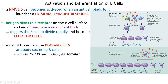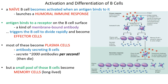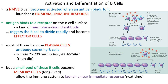The antibody on the surface of the B cell binds to an antigen, triggering proliferation and rapid cell division. Most of those B cells become plasma cells and secrete antibodies. A small subset of the effector cells become memory cells — these are long-lived and remain circulating in the blood for almost as long as the individual stays alive. This is the acquired immunity component of adaptive immunity.